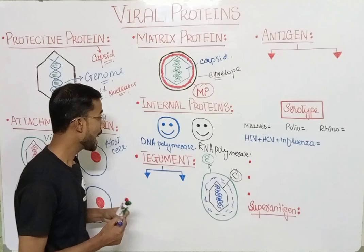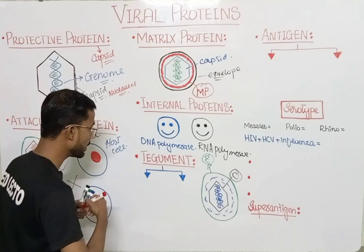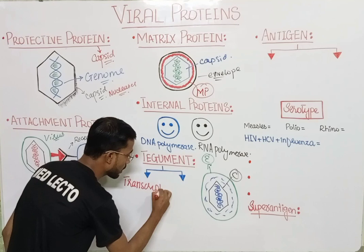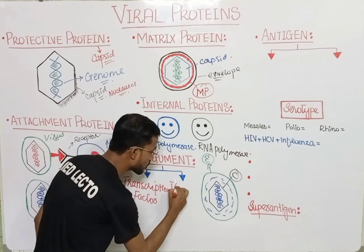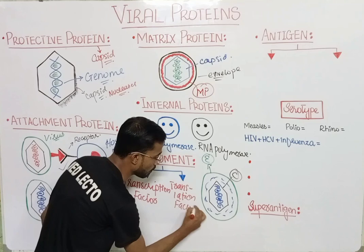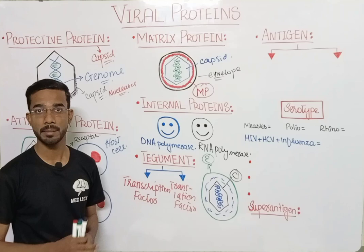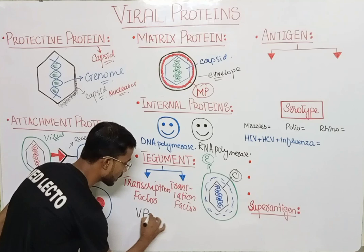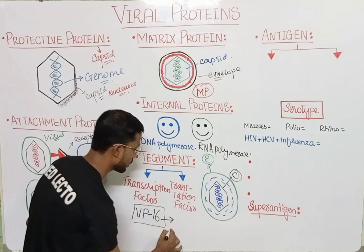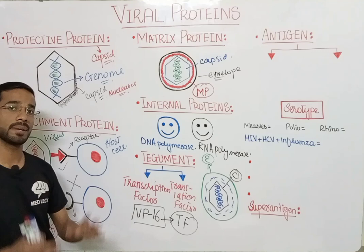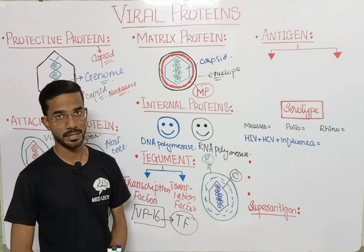The tegument can have two important components: first, transcription factors, and second, translation factors. These factors are involved in the replication of messenger RNA and different viral proteins, and ultimately in the replication of the viruses.